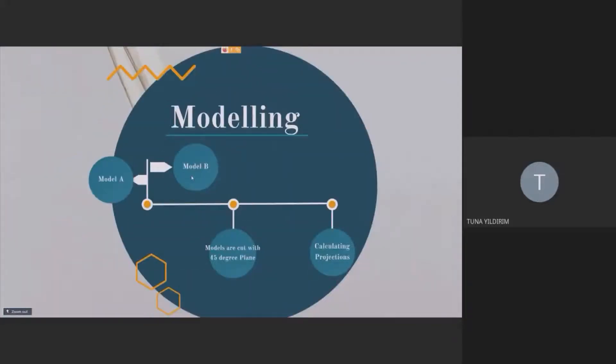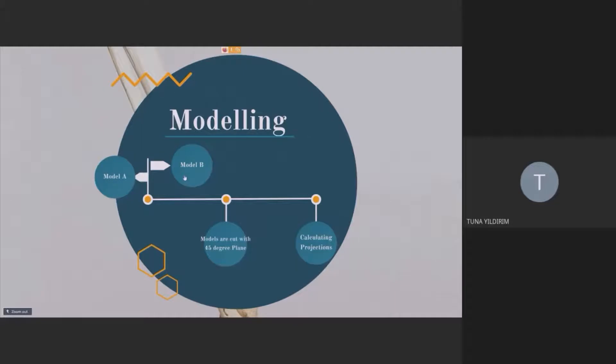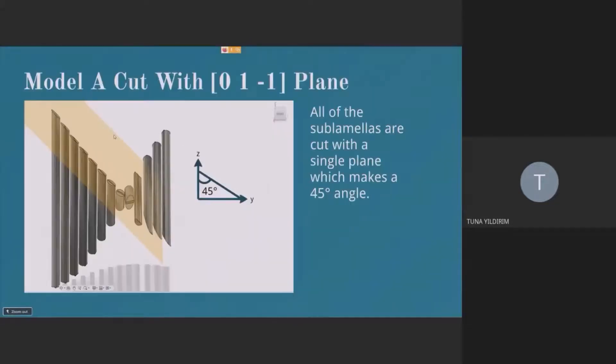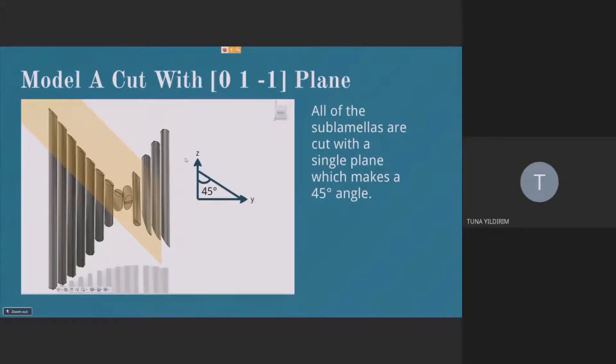And to get more different results, I cut the planes with different directions for both models actually. And I cut model A with a single cut, which is in this direction and which makes a 45 degree angle with z-axis. You can see it like that.